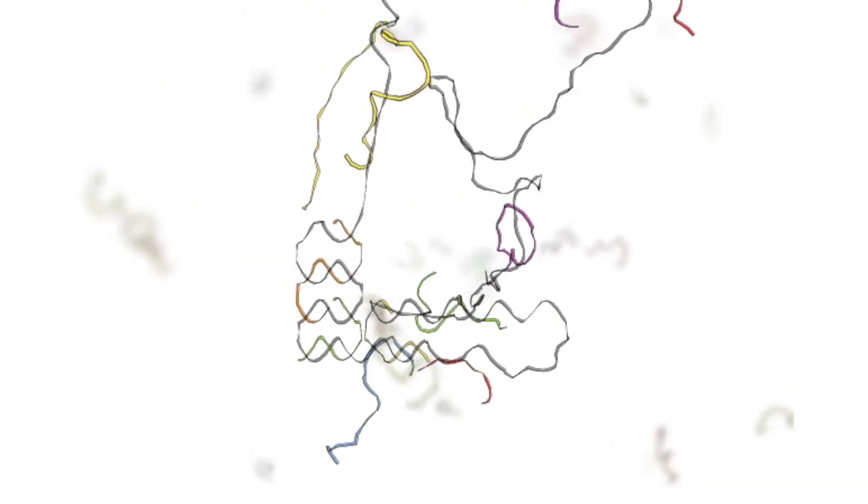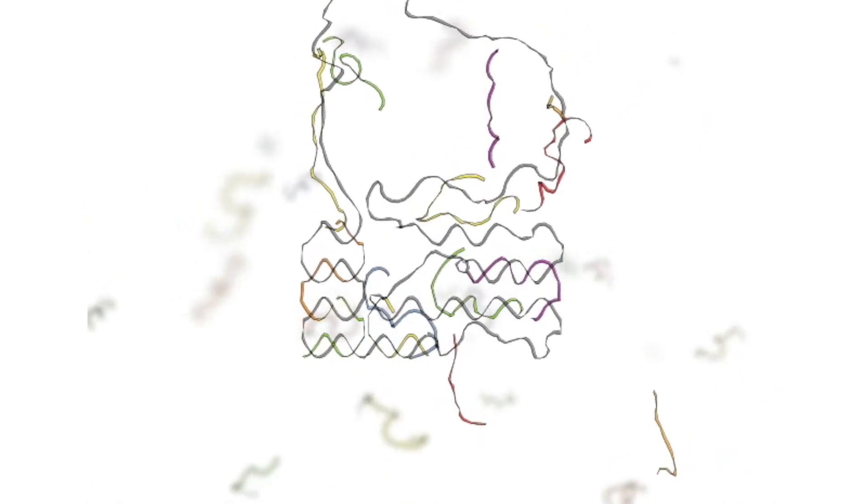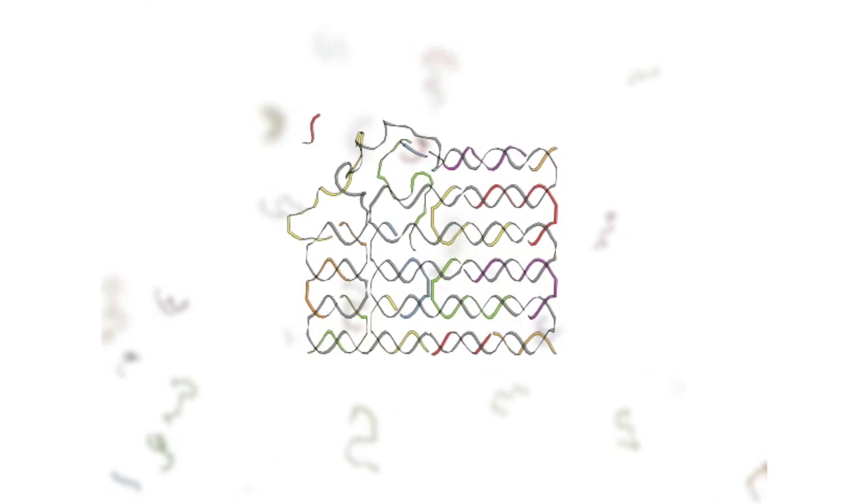DNA origami is a technology which takes DNA molecules and forgets that they have any form of connection to life. It treats them purely as a building material. If you forget about everything to do with life and try to exploit the only property of DNA — that it can have two different strands which combine together in a programmable way — it allows us to start building shapes by programming how these elements come together.